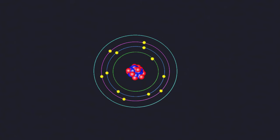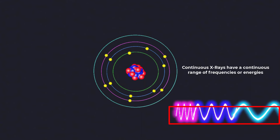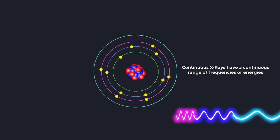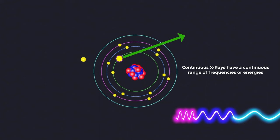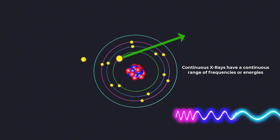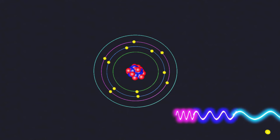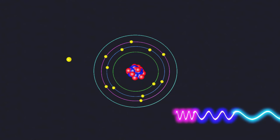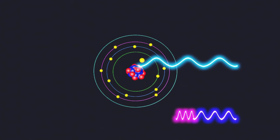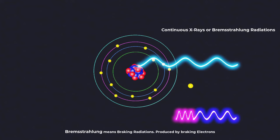On the other hand, continuous X-rays have a continuous range of frequencies or energies. They are produced when high-energy electrons interact with target atoms but instead of causing inner-shell ionization, they are slowed down and deviated from their original paths by the nucleus of the target atoms. During this deceleration process, the electrons lose energy and this energy loss is emitted as continuous X-rays.